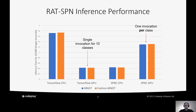Looking at inference results for RAD-SPN, we compare against the TensorFlow implementation. The TensorFlow GPU is much faster than TensorFlow CPU. Our CPU implementation with vectorization and multi-threading performs on par with the TensorFlow GPU implementation. Our GPU implementation is slightly slower because TensorFlow only needs a single model invocation for all 10 classes, whereas we require one invocation per class — 10 invocations total — with more data transfers per invocation. This is a limitation of SPFlow's internal representation format.